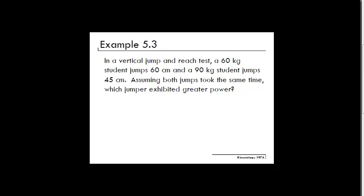So in this example, we are trying to determine power. From lecture, we know that power is the rate at which energy is produced. This can be written as P equals the change in energy over the change in time. Now that we notice that the example says that both jumps took the same time, which means we can ignore the time aspect of the equation.